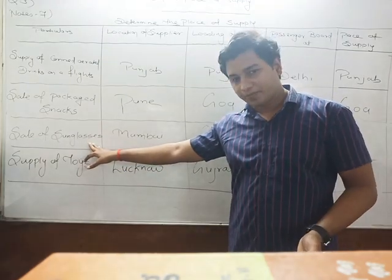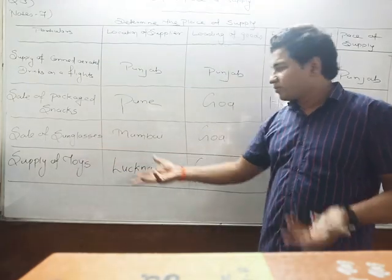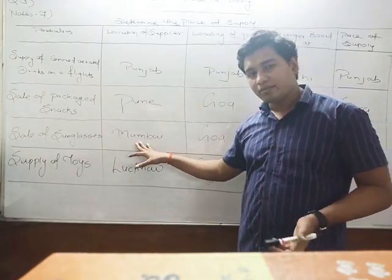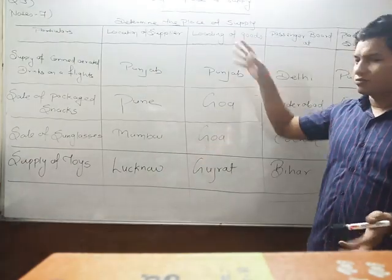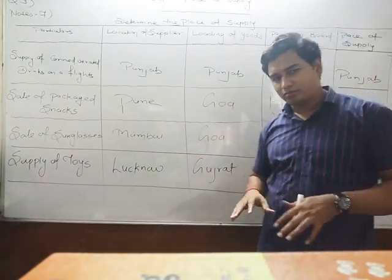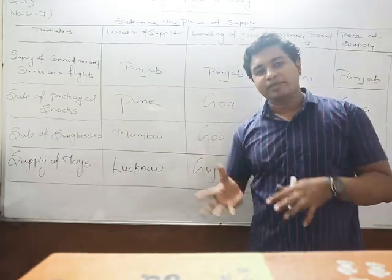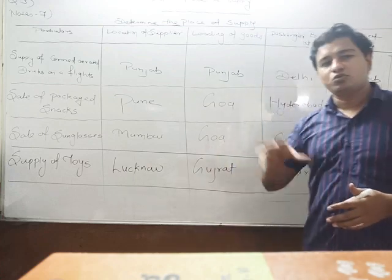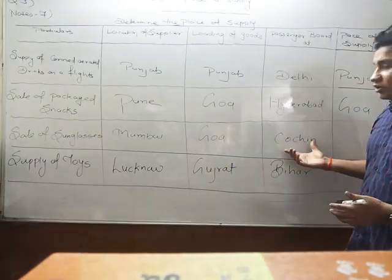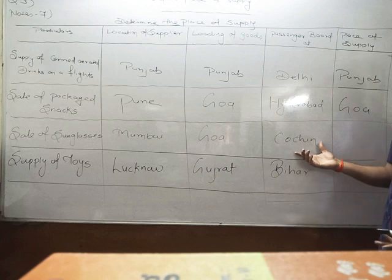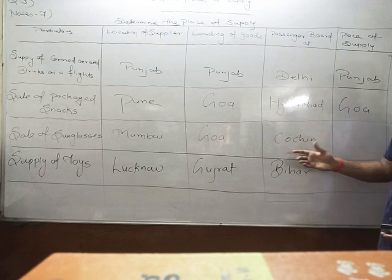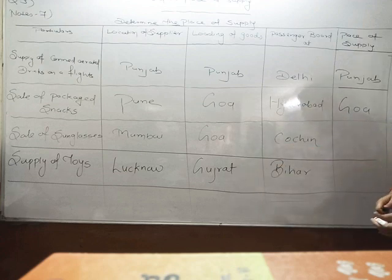Next is the sale of sunglasses, maybe on a flight. The supplier is from Mumbai. We have loaded the sunglasses in Goa. We are only concerned about Goa because Goa is the loading place, so Goa is the place of supply.